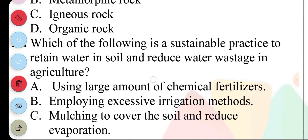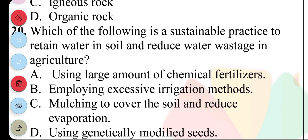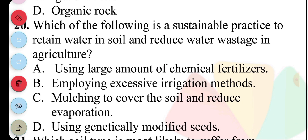Question 20. Which of the following is a sustainable practice to retain water in soil and reduce water wastage in agriculture? A. Using large amounts of chemical fertilizers, B. Employing excessive irrigation methods, C. Mulching to cover the soil and reduce evaporation, D. Using genetically modified seeds. The answer to question 20 is C. Mulching to cover the soil and reduce evaporation.